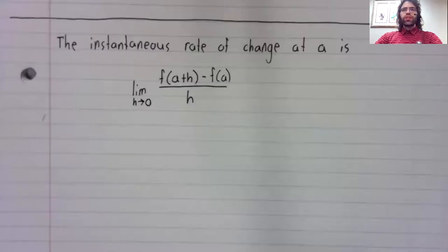The instantaneous rate of change of a function at a is our limit: the limit as h approaches zero of f of a plus h minus f of a divided by h.